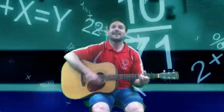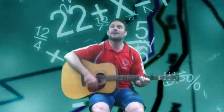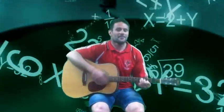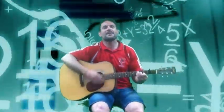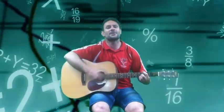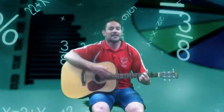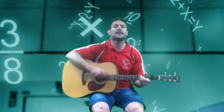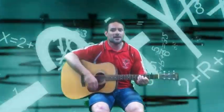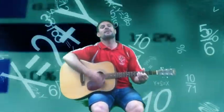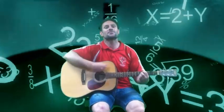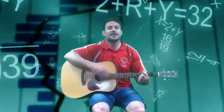Negative b plus or minus square root of b squared minus 4ac, all over 2a — that's the way.